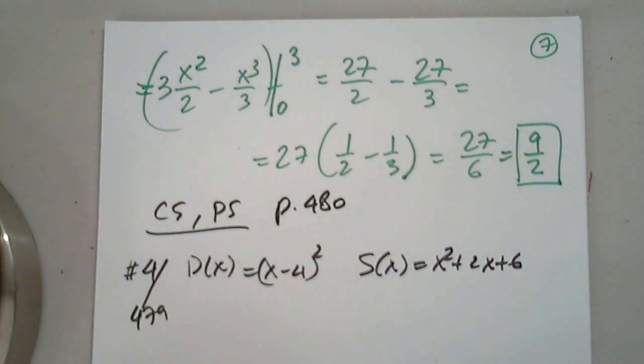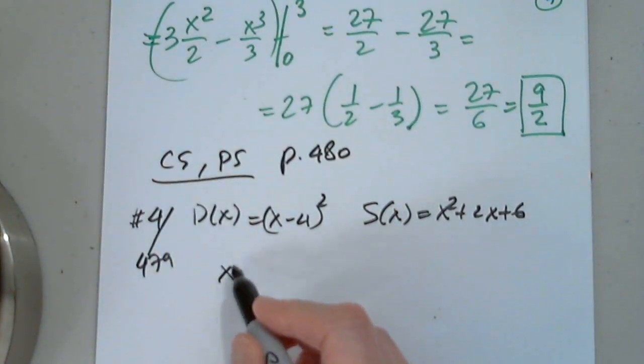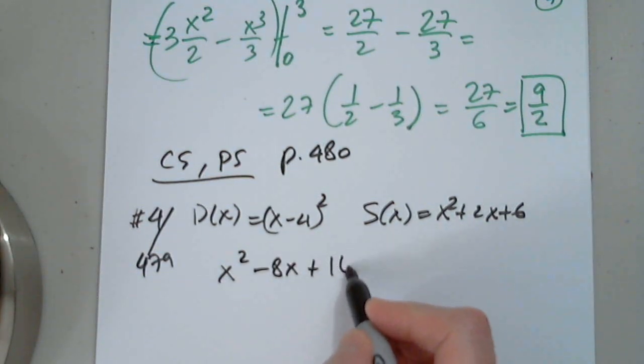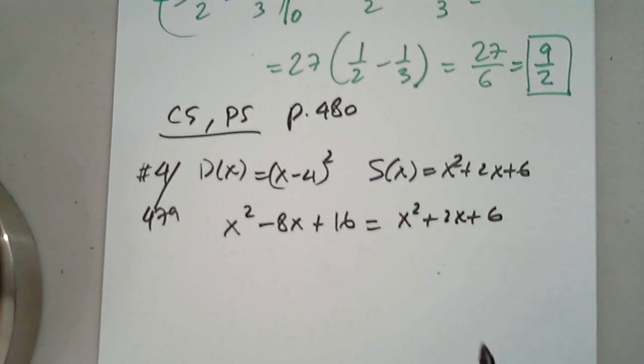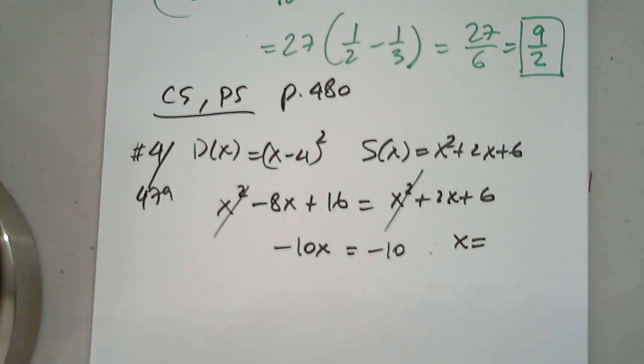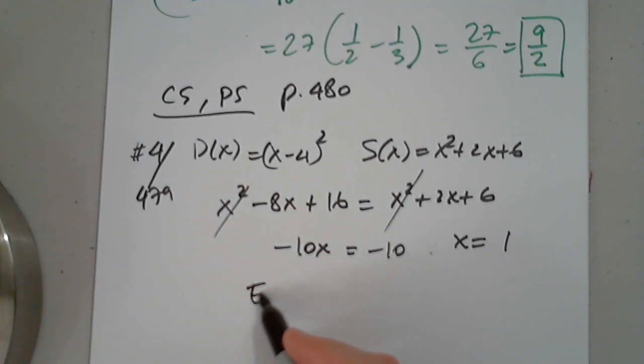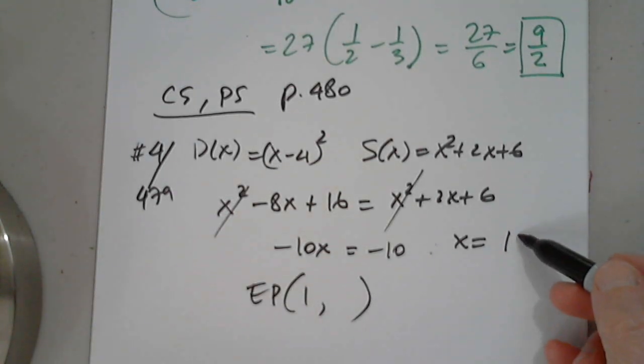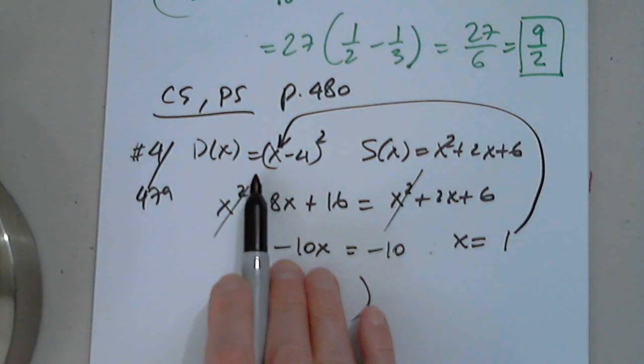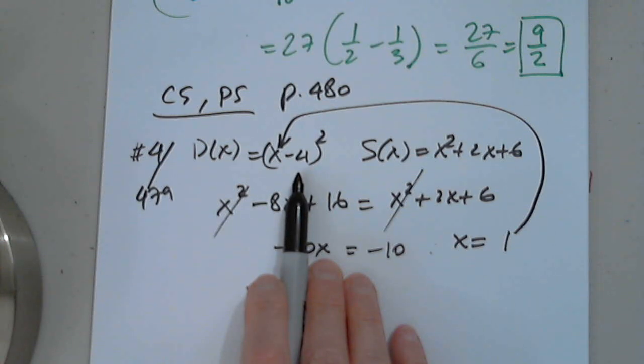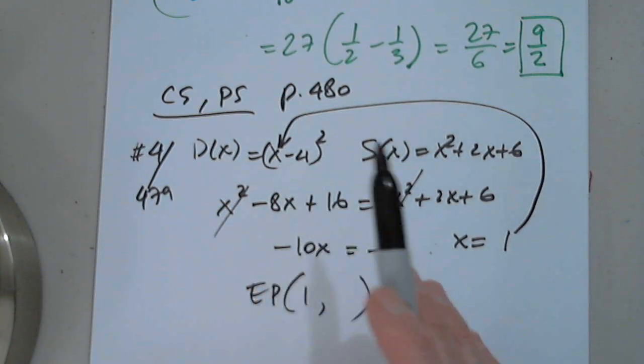and this is again 479. We have (x minus 4) squared, and S(x) is x squared plus 2x plus 6. They want us to determine the equilibrium point and the consumer surplus and producer surplus at the equilibrium point. Perfect. So how do we continue? We're going to set D(x) equals S(x). Very good. So this is x squared minus 8x plus 16 equals x squared plus 2x plus 6. Luckily these two go away. I move 2x, I move 16. How much is x? One. Perfect. The equilibrium point would be (1, 9). Excellent.